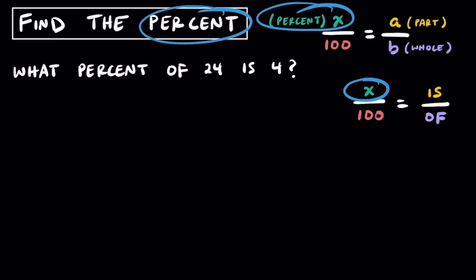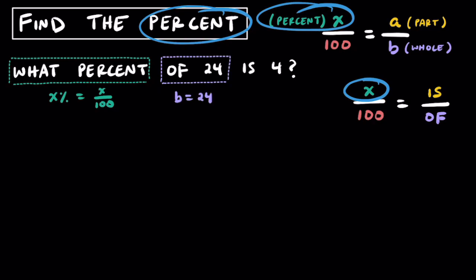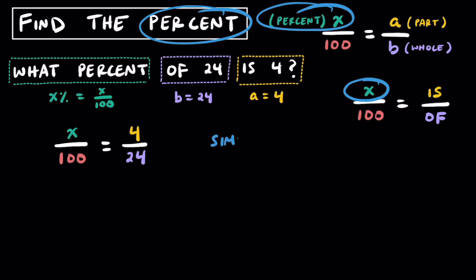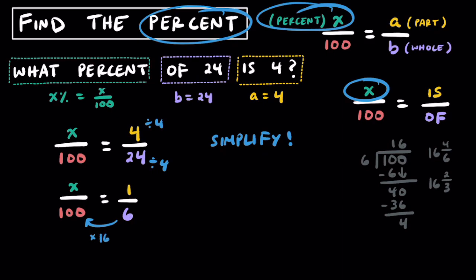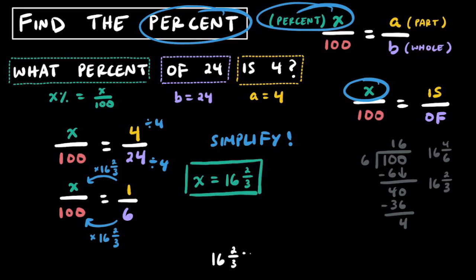Let's try another one: What percent of 24 is 4? 'What percent' is our unknown x over 100, 'of 24' means b equals 24, and 'is 4' means a equals 4. Our proportion is x over 100 equals 4 over 24, which simplifies to x over 100 equals 1 over 6. Dividing 100 by 6 gives 16 and 2 thirds — since this decimal repeats, I recommend using the fraction. So x equals 16 and 2 thirds, meaning 16⅔% of 24 is equal to 4.